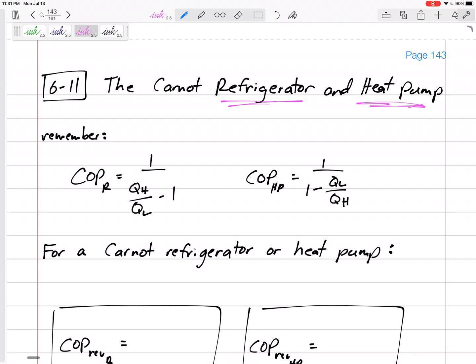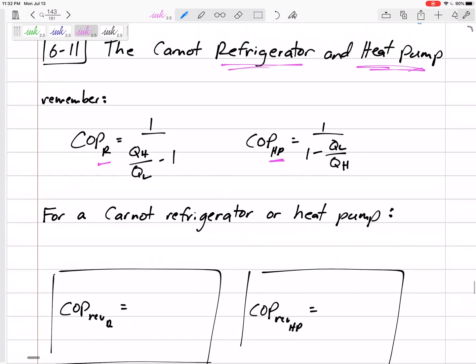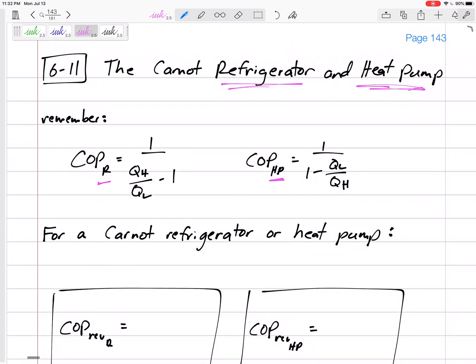Like I said, the difference between refrigerators and heat pumps - although they are the same device, the same processes - the refrigerator we're really concerned with the QL, the heat pump we're really concerned with the QH. And so that's why we have two different coefficients of performance. So we have equations for refrigerators, equations for heat pumps, separate and different from equations of heat engines.